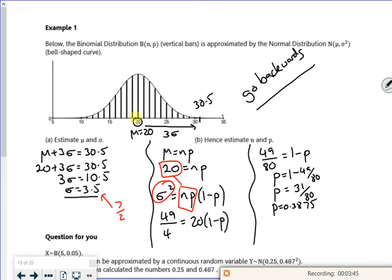And then if I sum it back into mu equals 20p, I can work out what n is. So go back into mu, which is 20, is n times the 31 over 80. So n is going to be, what's that going to be, 1600 over 31 for n.